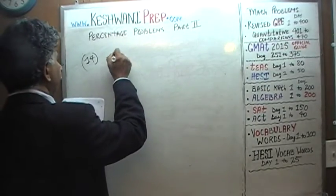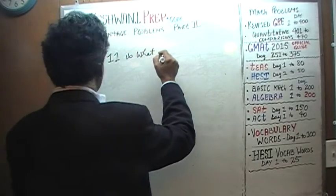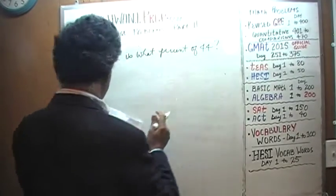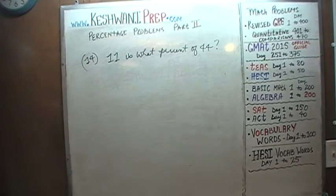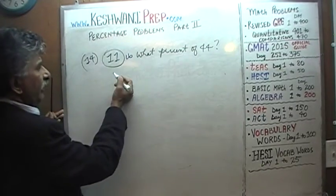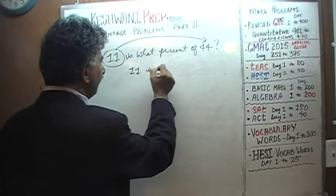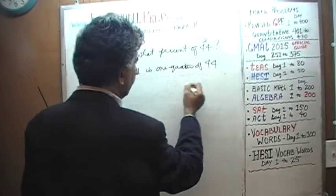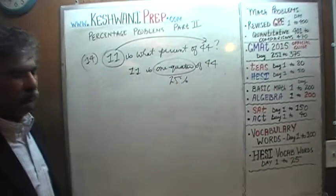Number 14: 11 is what percent of 44? I hope you're able to see right away that 11 is one quarter of 44. One quarter is 25%, so 11 is 25% of 44. Let's also work it out formally.